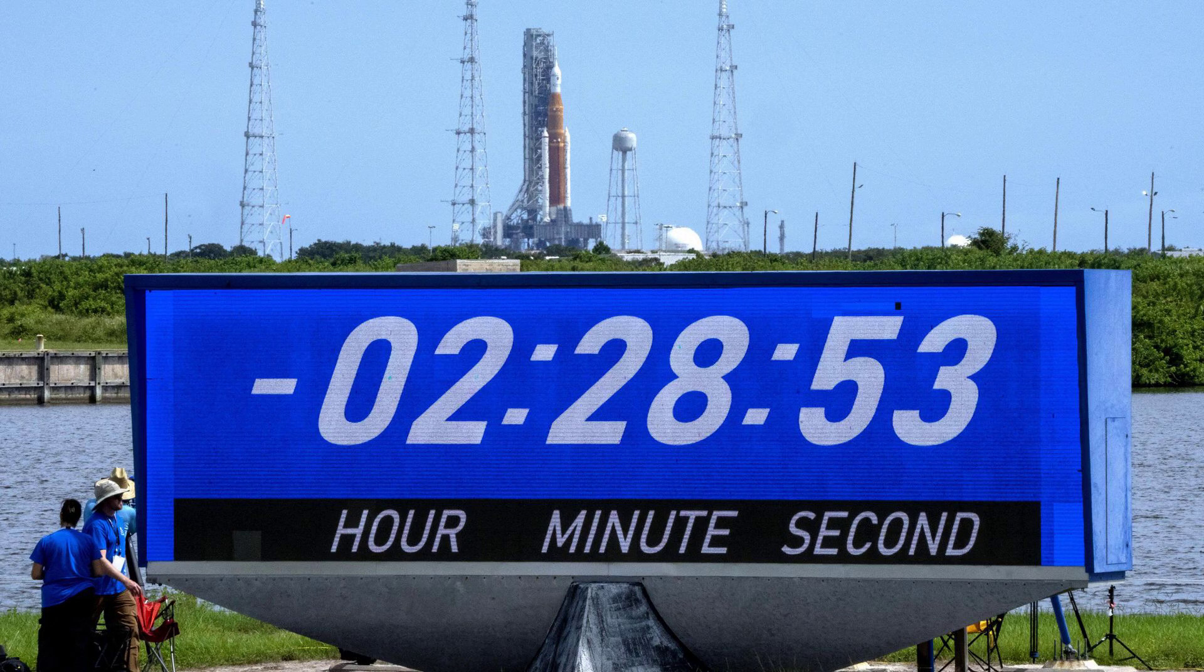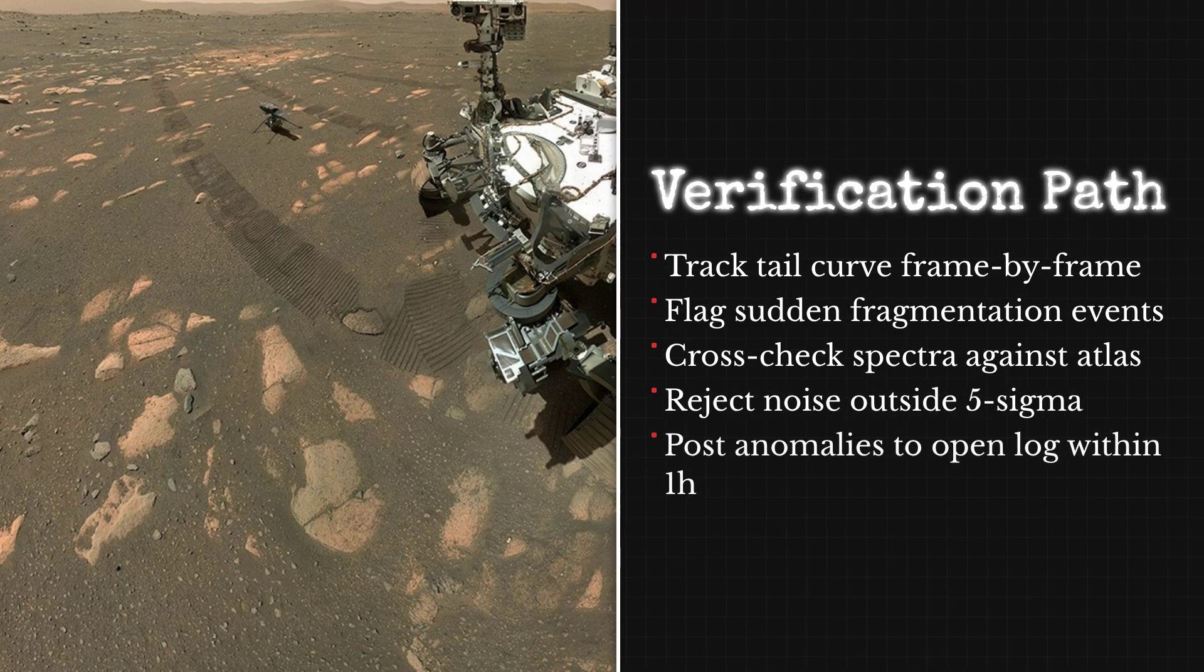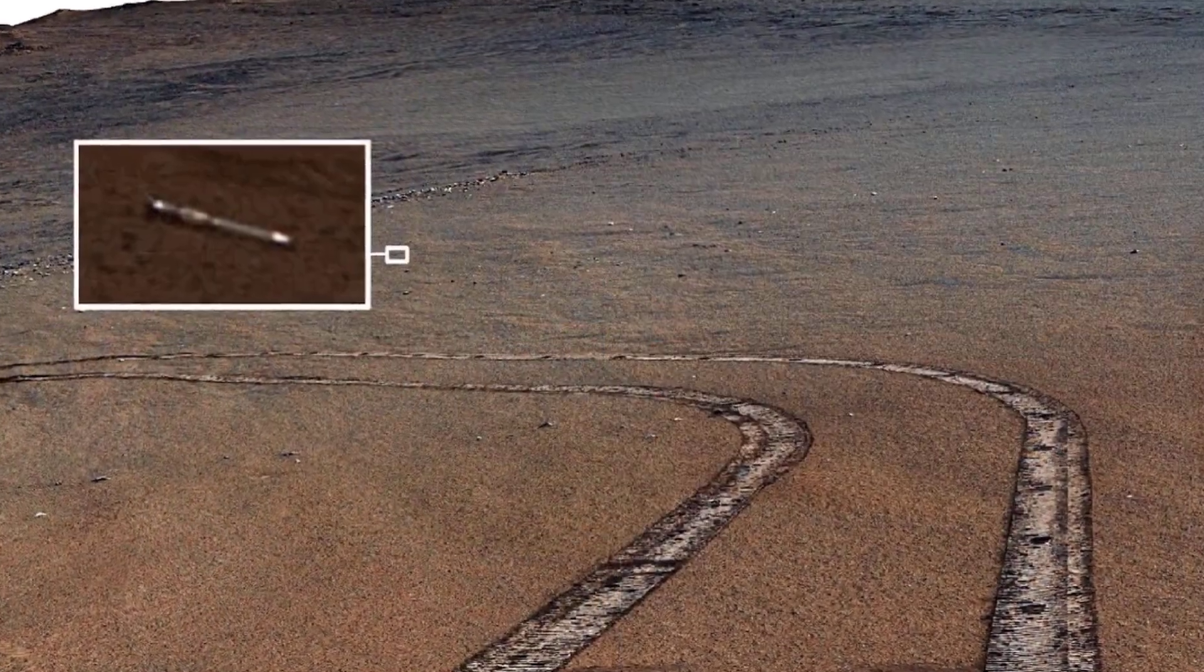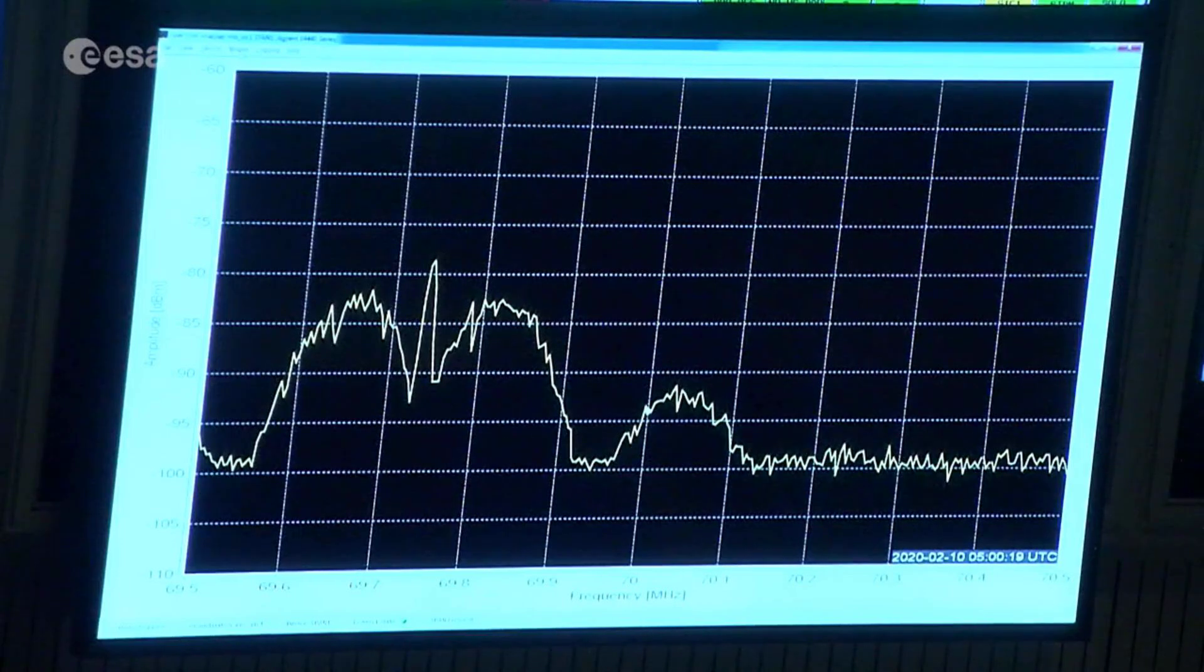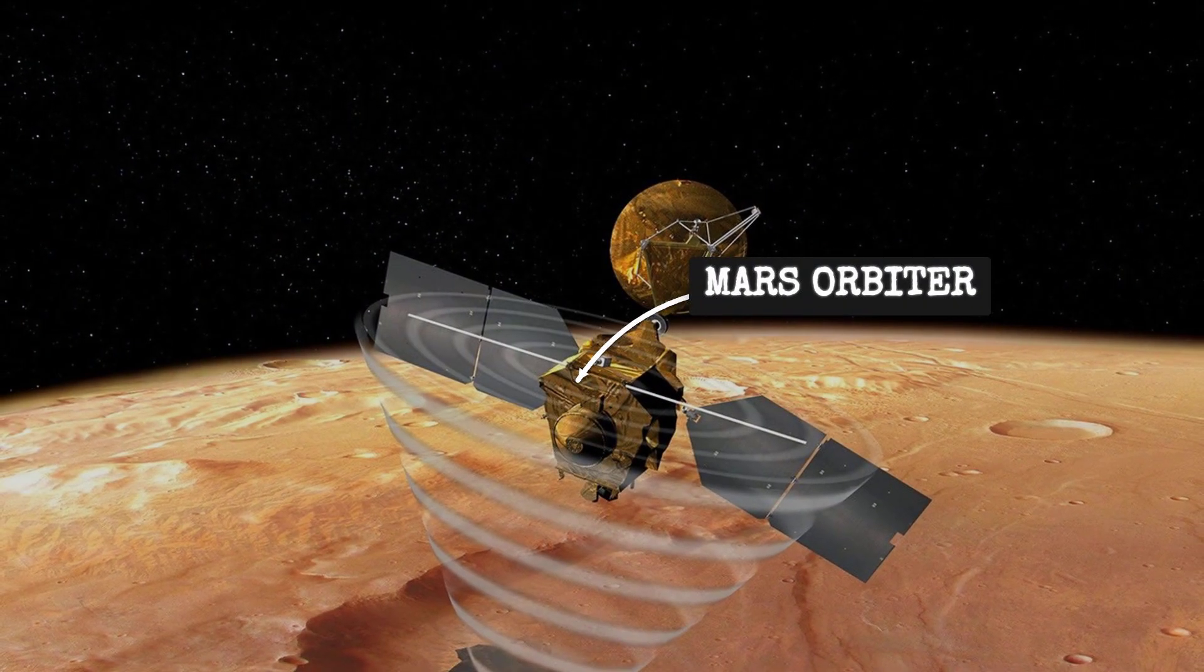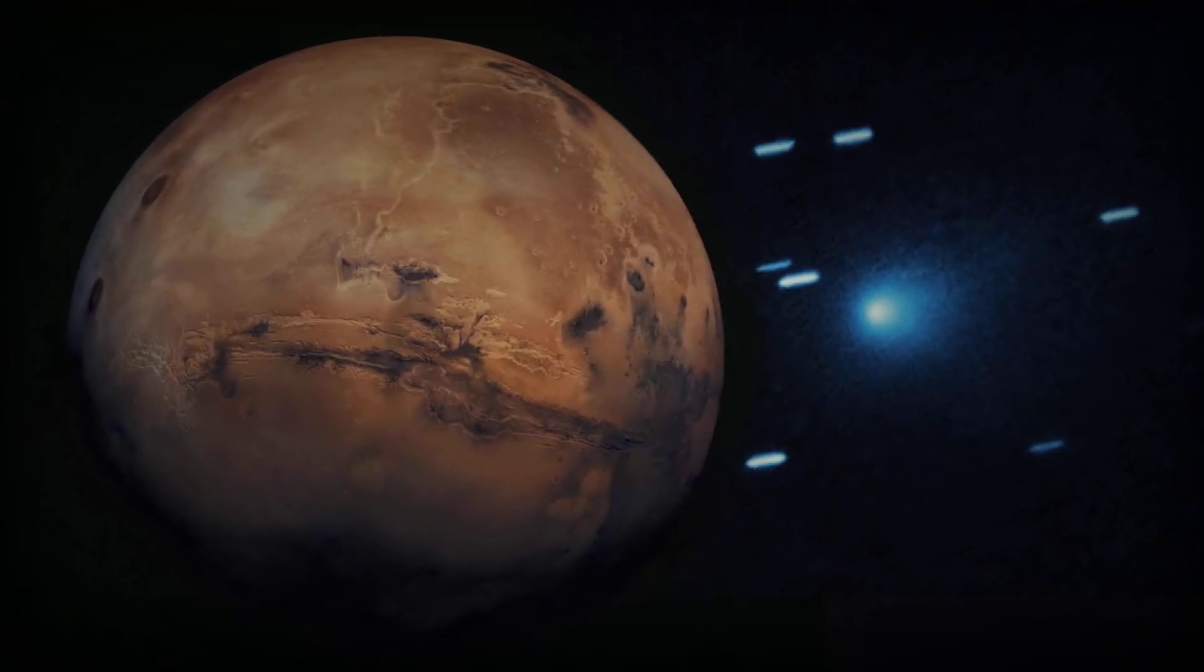First, quick-look frames, uncalibrated but timely, are scheduled to appear within 48 hours of the conjunction's end. These snapshots serve as the initial filter. Any abrupt tail change, sudden fragmentation, or spectral oddity will stand out even before full processing. Archival specialists move fast, downloading fresh releases and stacking them against the last pre-blackout frames, hunting for mismatches in position, brightness, or structure.